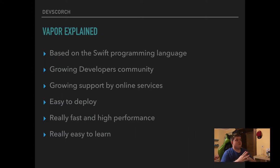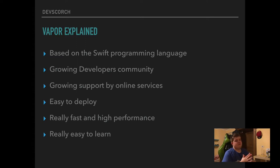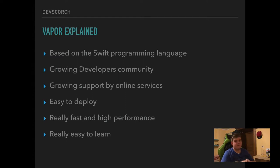Now let's talk about Vapor. Vapor is a Swift framework that allows developers to build entire backends and APIs. It's based on the Swift programming language. Swift is officially from Apple, but Apple has an open source variant called Swift Neo. It's really powerful — we'll talk about that in a separate video. It has a growing developers community. The official Vapor developers community is around 140 people in the Discord channel, but a lot of people are using Vapor for their daily use. It has growing support by online services and is really easy to deploy — you do two commands and it's deployed, it works.